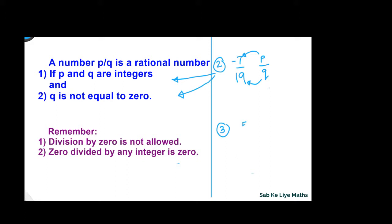Let's take 5. We can write this as 5 upon 1, in the form P by Q, where P is equal to 5 and Q is equal to 1. Both are integers, and Q is not equal to 0. So again, this is a rational number.